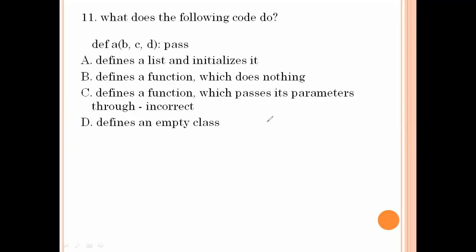What does the following code do? Define ERC with pass. This defines a function which does nothing — if you don't have anything, that is called a function with pass. Option number B is the right answer.